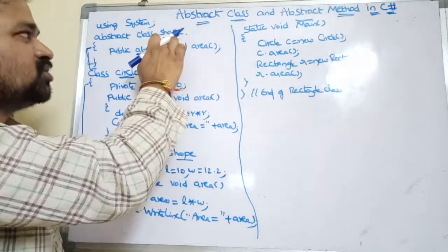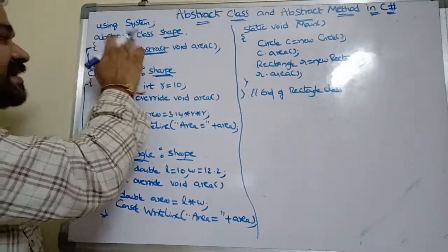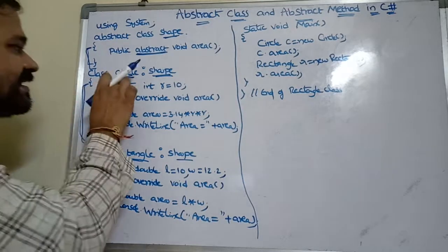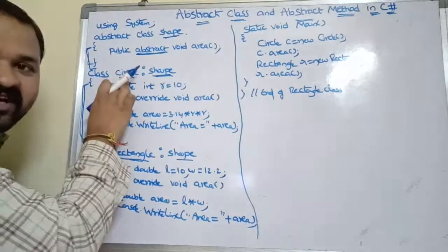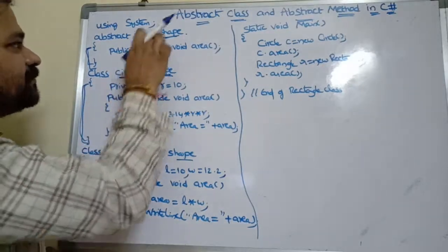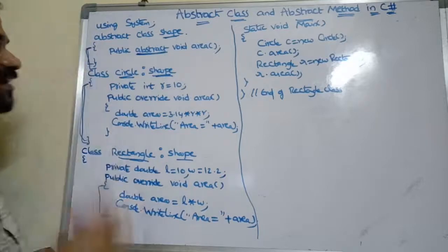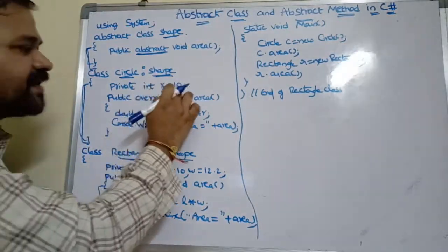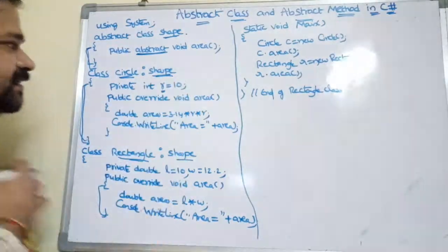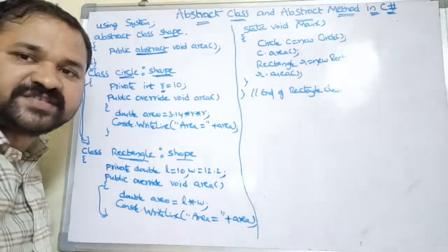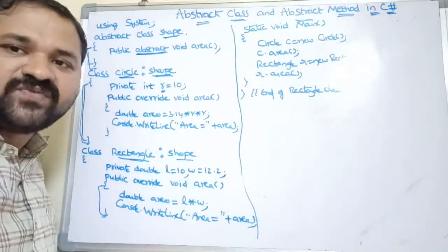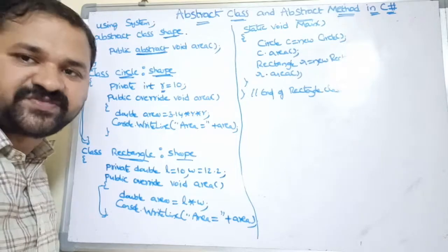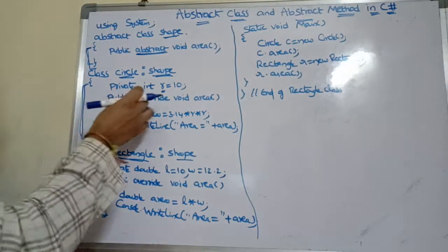Circle is a derived class which is derived from the base class Shape. Here we use a variable: private int r = 10. We are calculating the area of the circle — we know the formula for area of a circle is pi r squared, that is 3.14 * r * r.